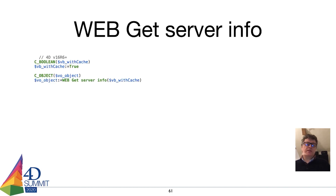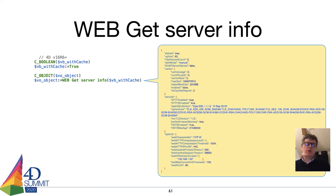Another useful command introduced in 4D v16 R6 is Web Get Server Info, which returns an object with a lot of information about your web server — including the OpenSSL version, cipher suite, TLS version, cache information, and options. It is a very useful command.